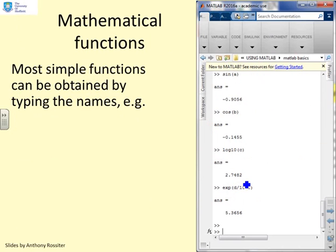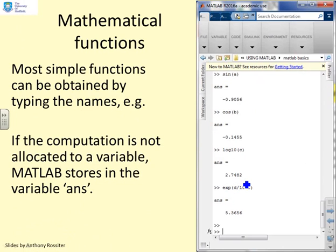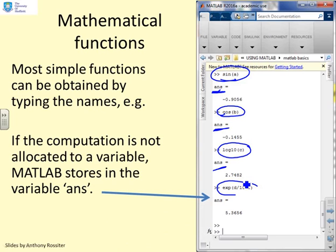You can also calculate mathematical functions just by typing the names. If you don't allocate the answer to a variable name, MATLAB will just put the variable into ANS. Here's an example. I've done sin A, I haven't told MATLAB where to put it, so it's put the answer into ANS. I've worked out cos of B, and it's put it into ANS. I've worked out log 10 of C, it's put it into ANS. And here exponential, and it's put it into ANS. As a general rule, make sure you put a variable name and it will go where you expect.